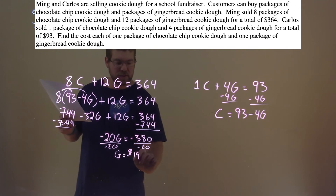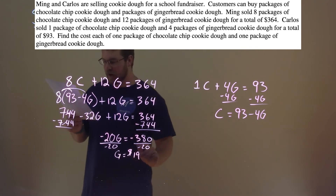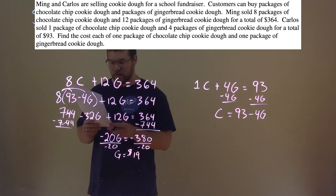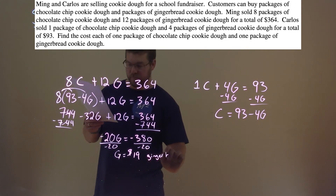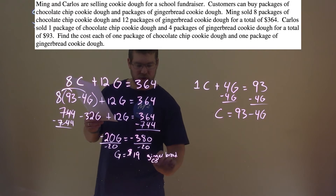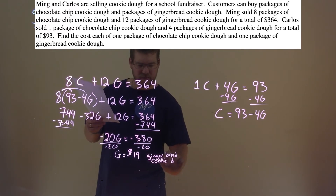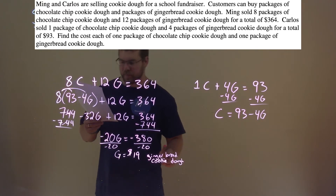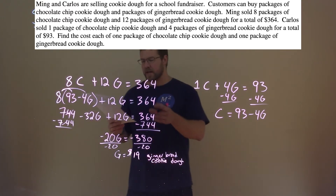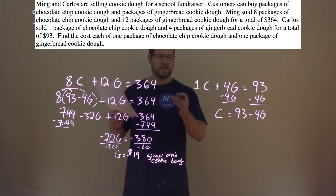This G represents the price of the package of gingerbread cookie dough. So $19 is the price of the gingerbread cookie dough.